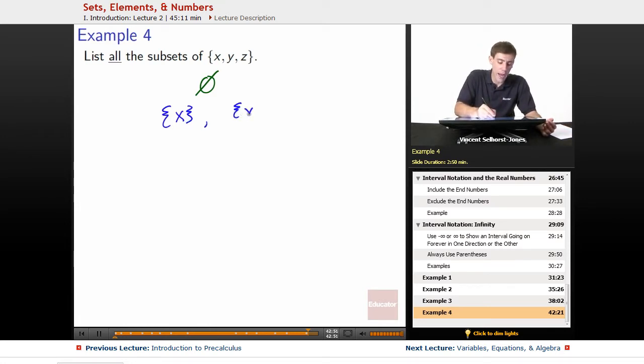Another one would be y. That's another subset. Another one would be z. So those are all of the sets that are one element long and are subsets of x, y, z.